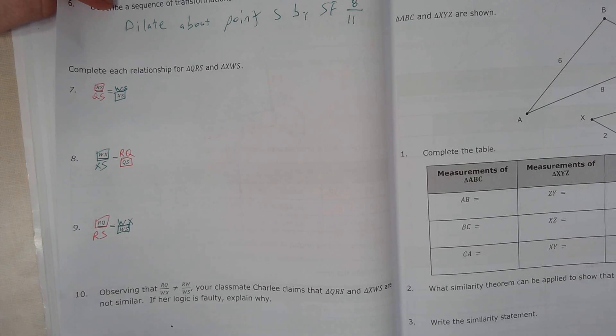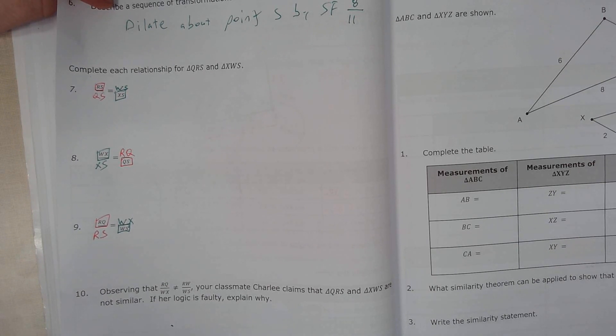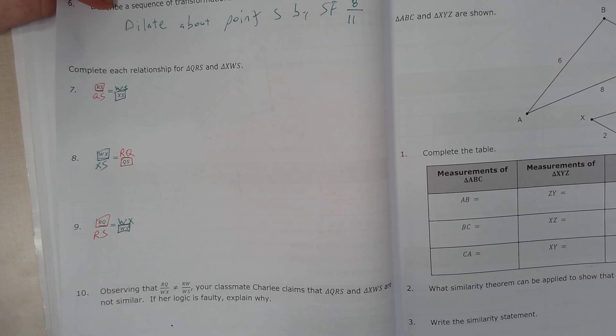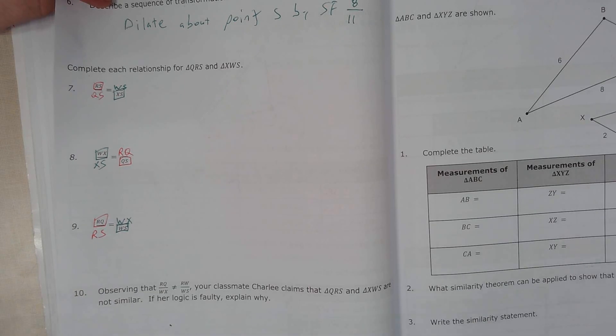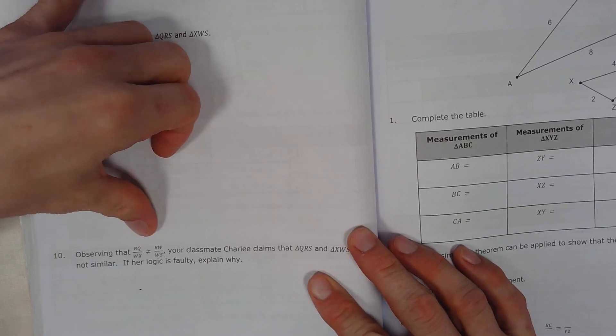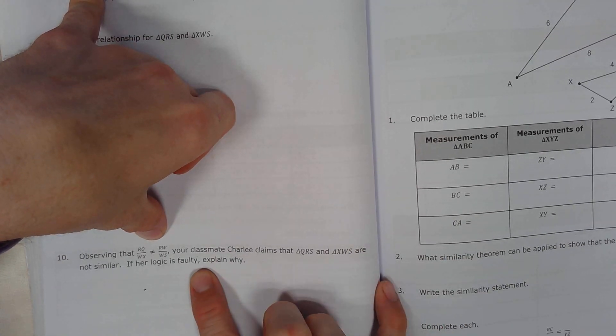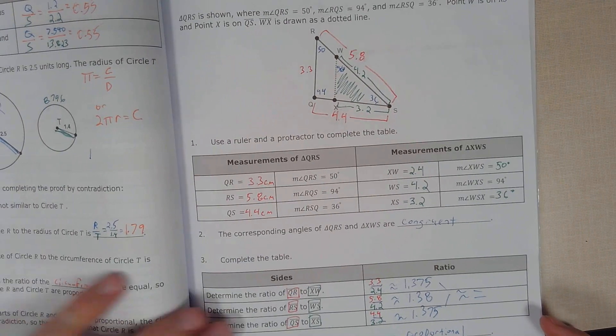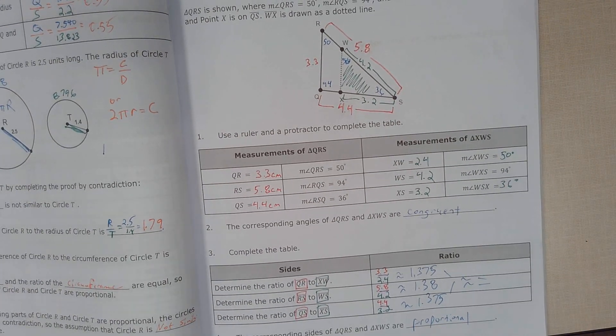There you go. Let me check the code, make sure everything is right here. Alright, so the next thing we can do, observing that these two are not equal, your classmate Charlie claims that these are not the same. Explain why.